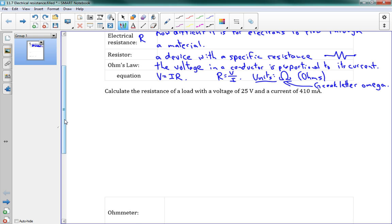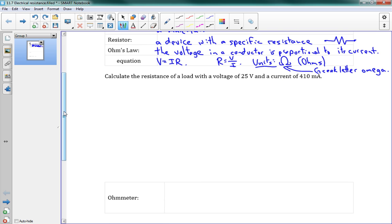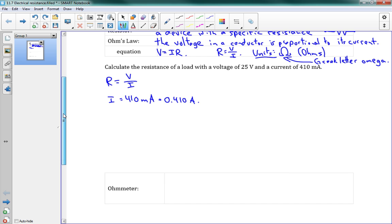We've got one problem to practice with this. Calculate the resistance of a load with a voltage of 25 V and a current of 410 mA. R equals V over I. We'll want to convert our current: 410 mA equals 0.410 A. Then we can calculate our resistance: 25 V over 0.410 equals a resistance of 61 ohms.